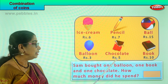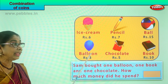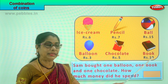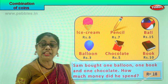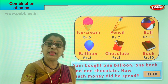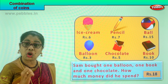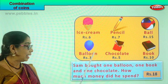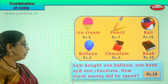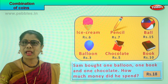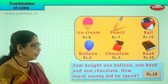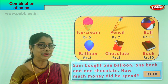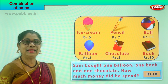Five plus three is eight. Eight plus ten is eighteen rupees. Sam spent a total of eighteen rupees. He took out eighteen rupees in coins and gave it to the shopkeeper, and got a book, a chocolate, and a balloon. Sam is very happy! How much did Sam spend in all? Eighteen rupees.